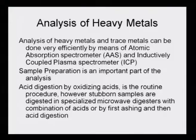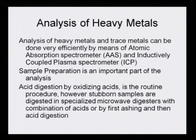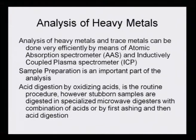Analysis of heavy metals and trace metals can be done very efficiently by atomic absorption spectrometry (AAS) — a very efficient and full-proof method — and a similar instrument called inductively coupled plasma spectrometry (ICP). Sample preparation is a very important and crucial part of the analysis, as I have been emphasizing time and again.